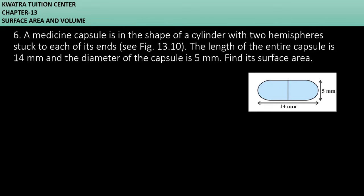Let's start with question number 6. It says a medicine capsule is in the shape of a cylinder with two hemispheres stuck to each of its ends. The length of the entire capsule is 14 mm and the diameter of the capsule is 5 mm. Find its surface area.